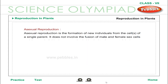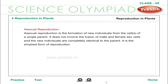Asexual Reproduction. Asexual reproduction is the formation of new individuals from the cells of a single parent. It does not involve the fusion of male and female sex cells, and the new individuals are completely identical to the parent. It is the simplest form of reproduction.